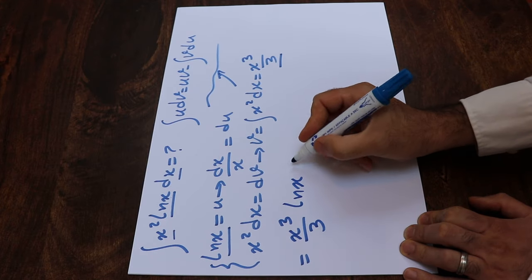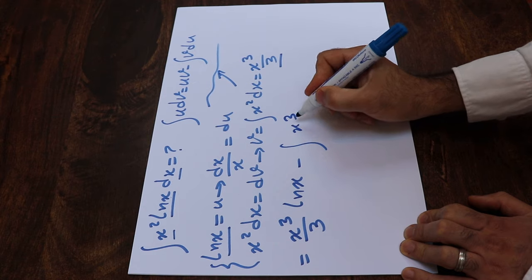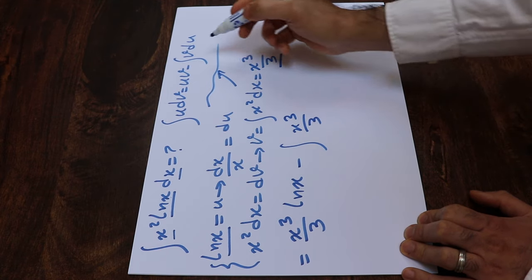That is u times v minus the integral of v, which is x³ divided by 3, times du.